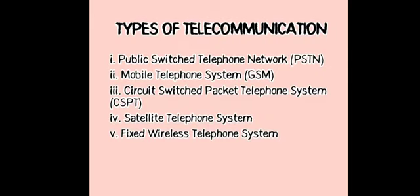The fourth type is the satellite telephone system, which is a mobile telephone that connects to orbiting satellites instead of using terrestrial cell sites. We also refer to the satellite telephone as a satellite phone or sat phone. It provides similar functions to terrestrial mobile phones, such as short messaging service (SMS), internet access, and voice communication.